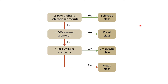Kidney biopsy can be classified according to the presence of sclerosis or crescents. If ≥50% of glomeruli are globally sclerotic, this is the sclerotic class, which may respond weakly to immunosuppressors. If ≥50% are normal glomeruli, it is the focal class. If ≥50% are crescentic, it is the crescentic class. If none of these criteria are met, it is called the mixed class.